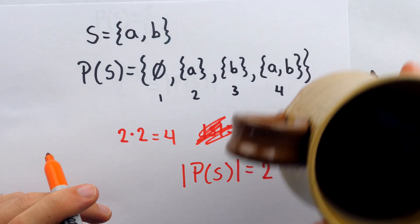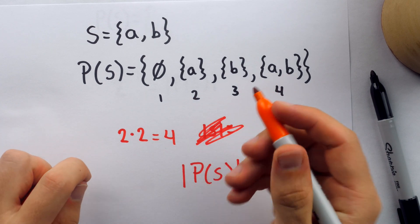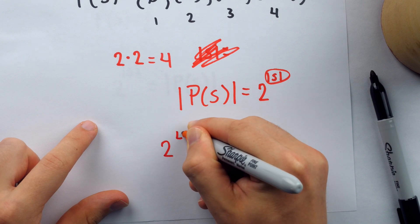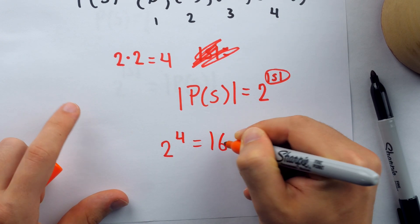And when we're constructing subsets, we have two choices for each of the cardinality of S elements. Include it or don't include it. So that means if we have a set with four elements in it, then the power set is going to contain two to the power of four subsets. And of course, that would be 16.